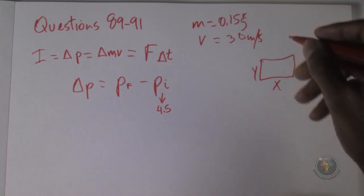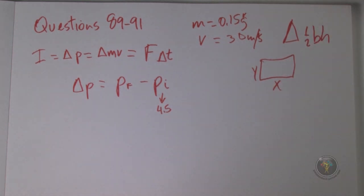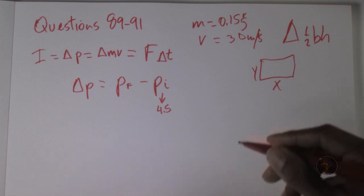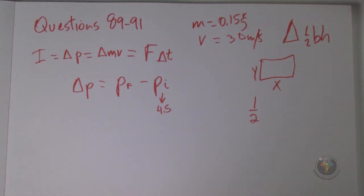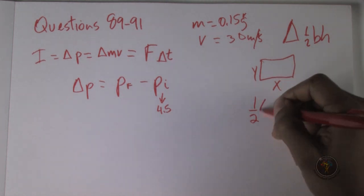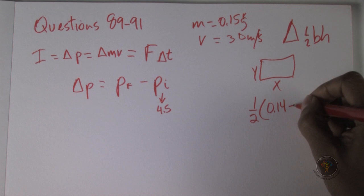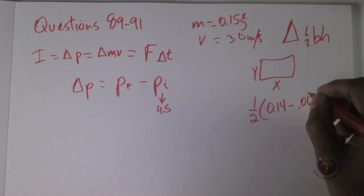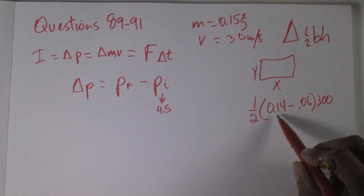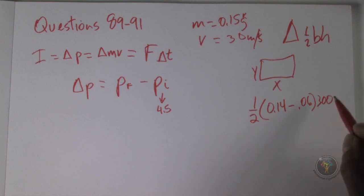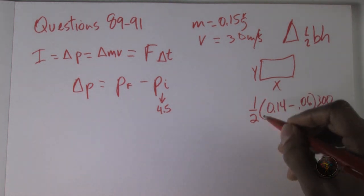We calculate the area under the curve as a triangle: one half times base times height. The base goes from 0.06 to 0.14 seconds, so the base is 0.08 seconds. The height goes up to 300 Newtons. So we have one half times 0.08 times 300, which gives 8 times 3 over 2, equal to 12.